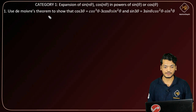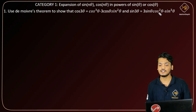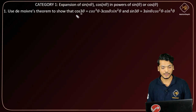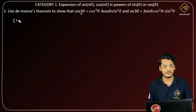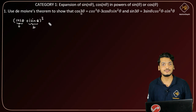In the first question of category 1, we have to show that cos(3θ) = cos³θ - 3cosθ·sin²θ, and sin(3θ) = 3sinθ·cos²θ - sin³θ. To solve this type of problem, we consider (cosθ + i·sinθ)^3 and apply binomial expansion. Let cosθ = a and i·sinθ = b, so I will use the formula (a + b)³.